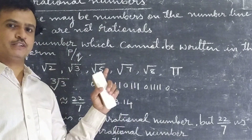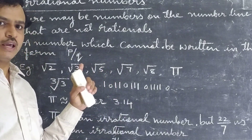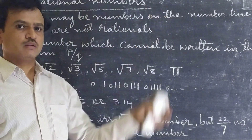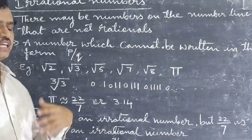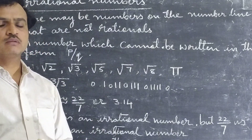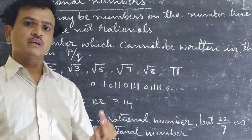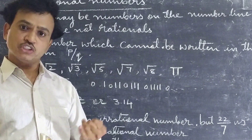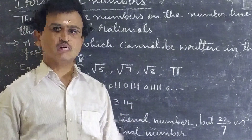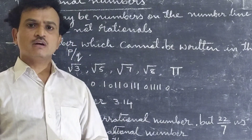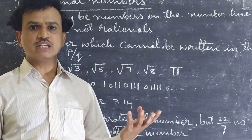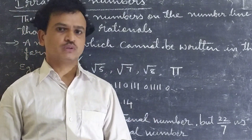In the number system, we again look at irrational numbers. What are irrational numbers? You know that we have natural numbers, whole numbers, integers, and rational numbers. Then we come to the point of irrational numbers. Irrational numbers means a number that cannot be written in the form P by Q. That is said to be an irrational number.